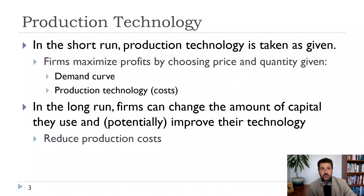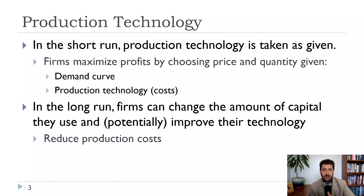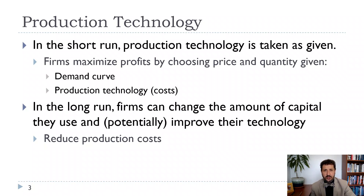Production technology is also going to be hugely important to a firm's production decision, because we need to think about how much it's going to cost to produce at different levels, and whether they can reduce those production costs through research and development. Those costs are going to be the flip side of the profit decision. We'll think about revenue first, and then in the next video we're going to think about costs. If a firm is able to reduce costs, even if they don't have a lot of market power, that's one way for them to increase profitability.